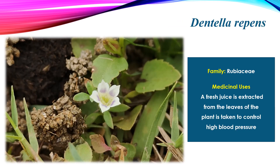Next is Dentella repens. It is one of the most important wetland flora, and people also use the leaves as a leafy vegetable. This plant belongs to the family Rubiaceae and has many medicinal uses. The fresh juice of this plant is extracted and taken for controlling high blood pressure.